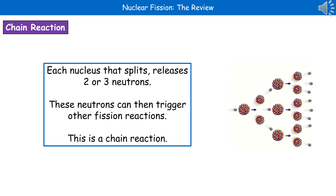Every time the nucleus splits, it releases two or three neutrons. Each of those neutrons could be absorbed by another nucleus, which could then trigger those to undergo a fission reaction. The diagram on the right shows what's called a chain reaction. We start off with one neutron joining with a nucleus that then splits to create two to three other neutrons; they go and join with other nuclei to cause them to undergo fission, making another three neutrons apiece, which can then go on to cause fission in another nine nuclei, and so on. So a chain reaction can get very large, very fast.